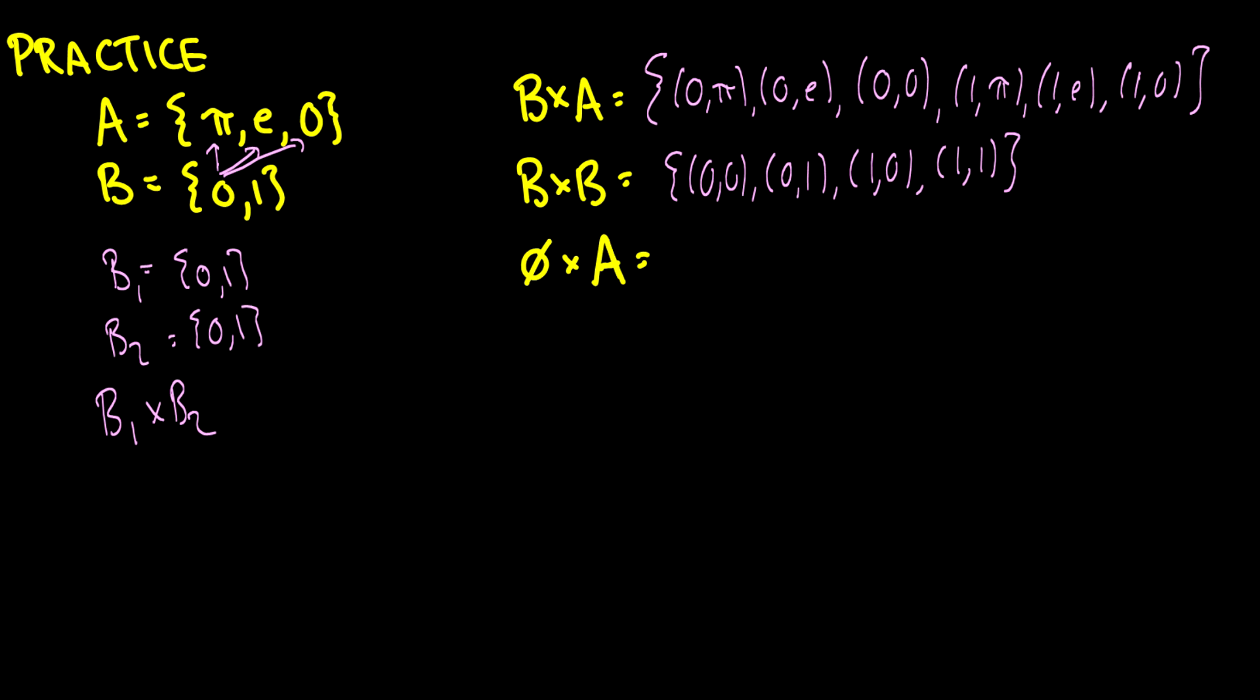So what we have here for pairs is we have (0,0), (0,1), (1,0), and (1,1). So again, if we draw this, we go 0,0, 0,1, and then we do the other set here, 1,0 and 1,1. So every element in B is being paired with every element in itself, essentially.